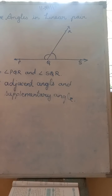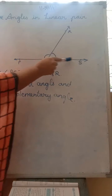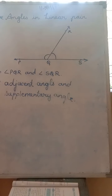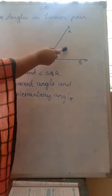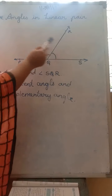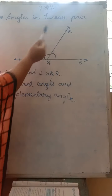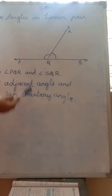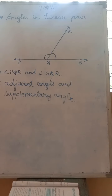Now, why are they supplementary angles? If you will see, this is a straight line and a straight line always measures 180 degrees, and now there are two angles. Of course, these two angles' measurement will be 180. So they also form a pair of supplementary angles.